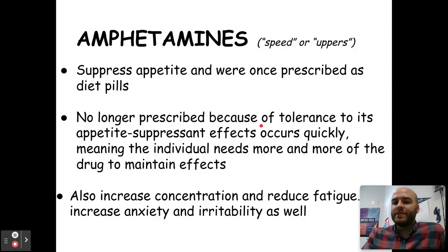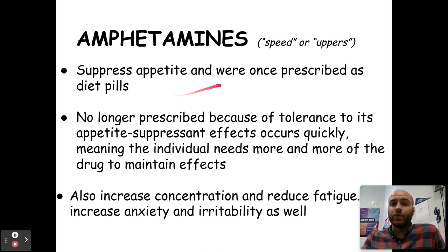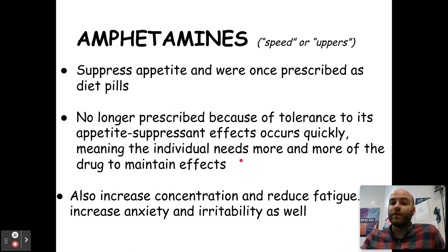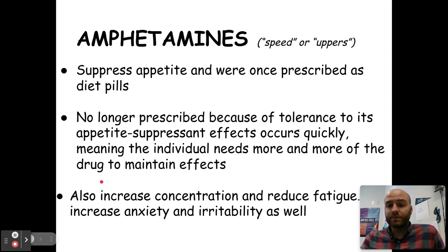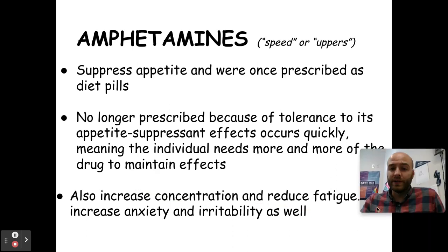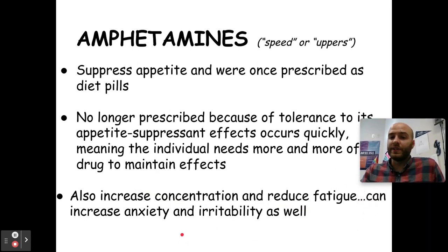Next up, we have amphetamines, also known as speed or uppers. These can suppress your appetite and were once actually prescribed as diet pills. They're no longer prescribed because tolerance to the appetite-suppressant effects occurs very quickly, meaning the individual needs more and more of the drug — that's what makes them very dangerous. Amphetamines can also increase concentration and reduce fatigue, but they increase anxiety and irritability as well. These drugs have a number of side effects, both positive and negative, depending on what you're looking for.